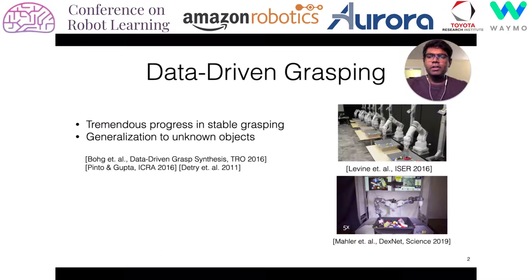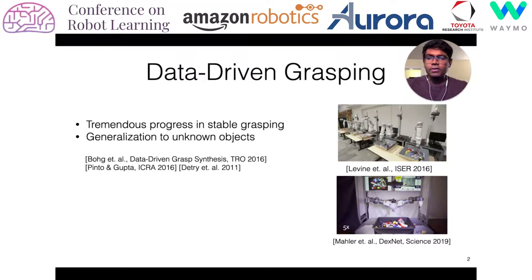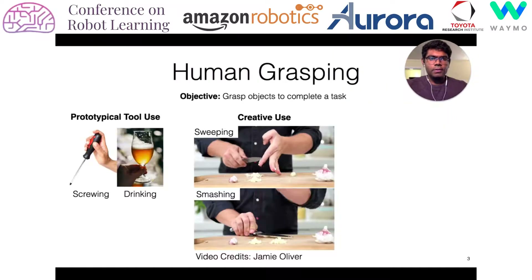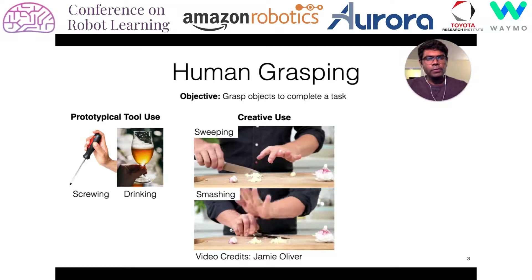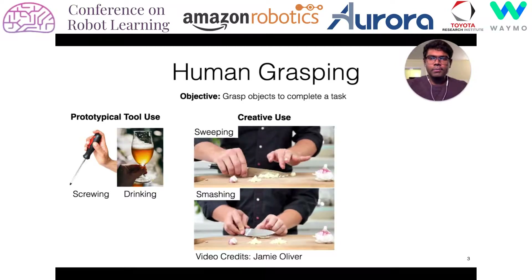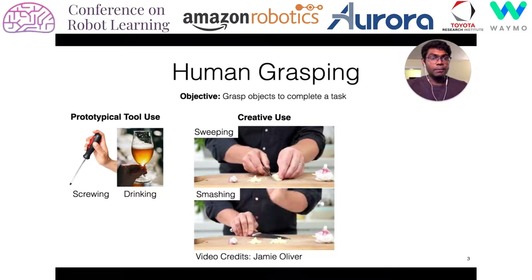In recent years, we've seen tremendous progress in data-driven stable grasping, and now we can even generalize to a lot of unknown objects. But this is very different from how humans do grasping, because we don't just pick up objects for the sake of it, but we want to grasp objects to complete a task.